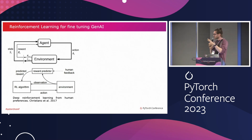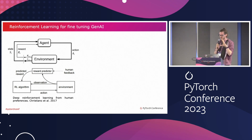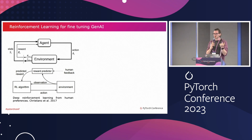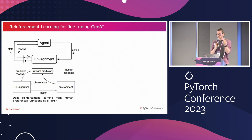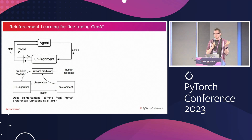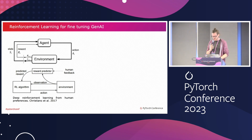That's the top part of this graph. On the bottom part, as you see, is the reward model — the module you're going to use to assign rewards to a certain output of the model. It doesn't come out of the blue; you need to build that thing, and we're going to see later how you can do that.